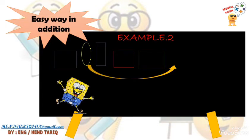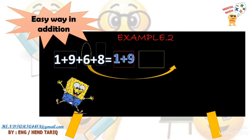Look at example number 2: 1 plus 9 plus 6 plus 8. Where are the friends of 10? 1 plus 9 and 8 plus 2.